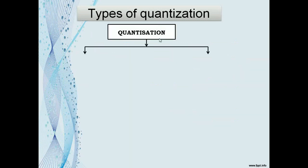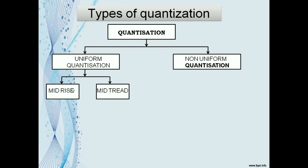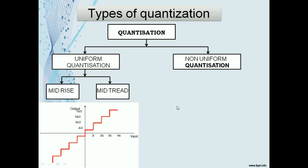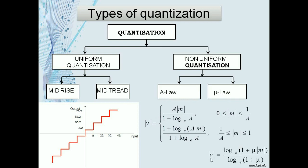Quantization is broadly divided into two types: uniform quantization, where the step size is constant, and non-uniform quantization, where a variable step size is assigned. Uniform quantization is further divided into mid-tread quantization, where the characteristic curve has a tread at the middle point, and mid-rise quantization, where it has a rise at the midpoint. Non-uniform quantization is classified into A-law and mu-law, each defined by specific output voltage equations.